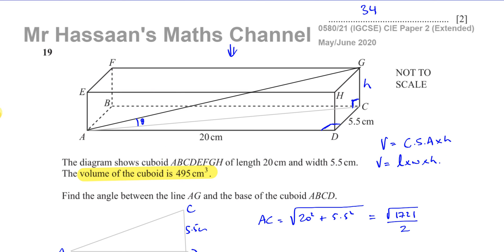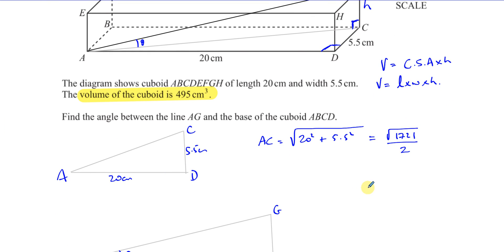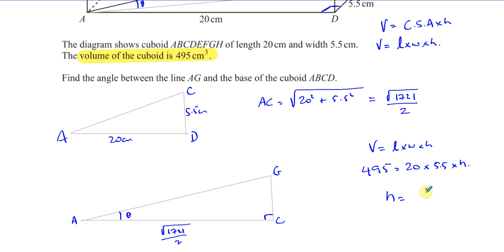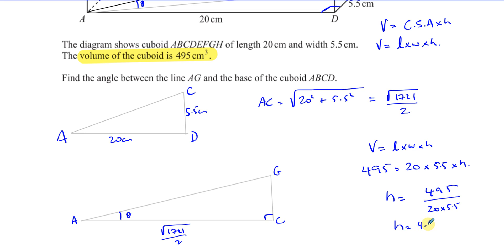So, knowing that the volume is 495, and the length is 20, and the width is 5.5, we can find the height. So we can say that the volume is equal to the length times the width times the height. So we can now find what the height is just by rearranging this. It's 495 over 20 times 5.5. We have 495 over 20 times 5.5, and that gives us 9 over 2, which is 4.5. So the height is 4.5 centimeters.